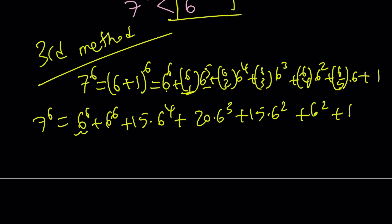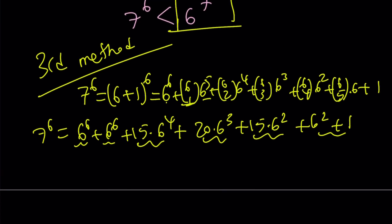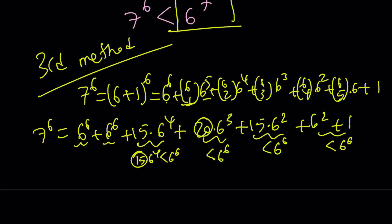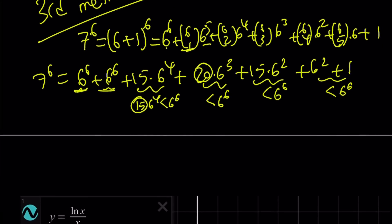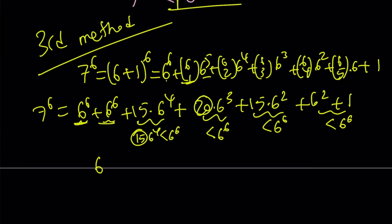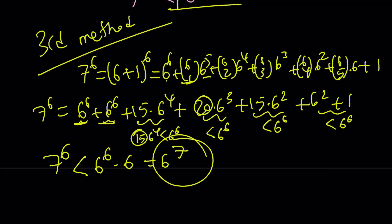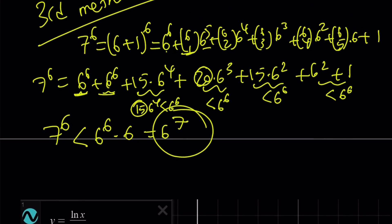I'm going to make 6 groups here. The last two terms, 6 squared plus 1, equal 37, which is definitely less than 6 to the 6th. Notice that 15 times 6 to the 4th is less than 6 to the 6th because 15 is less than 6 squared, and 20 times 6 to the 3rd is less than 6 to the 6th because 20 is less than 6 to the 3rd. All groups are less than or equal to 6 to the 6th, so the total is less than 6 groups of 6 to the 6th, which is 6 to the 7th. Putting 7 to the 6th on the left-hand side gives the same inequality as before: 6 to the 7th power is the larger number.